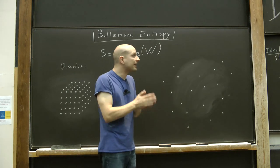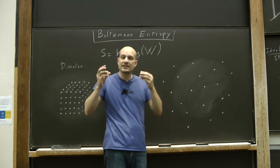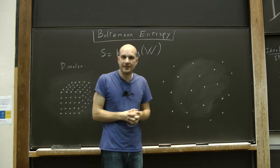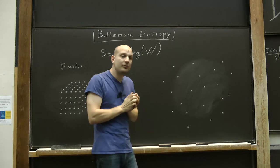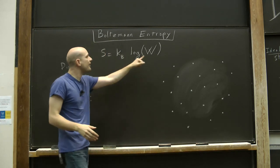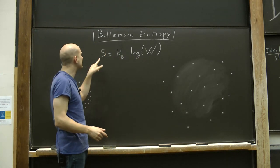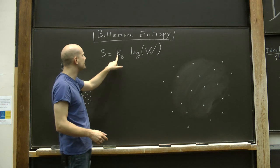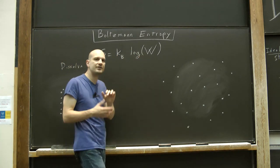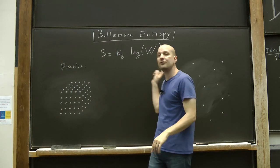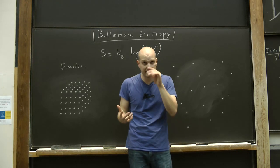So thermodynamic entropy quantifies irreversibility. But those of you who are familiar with the notion of entropy will probably have seen this formula before, that says that the entropy is equal to the Boltzmann constant times the log of W. What does this formula have to do with irreversibility?